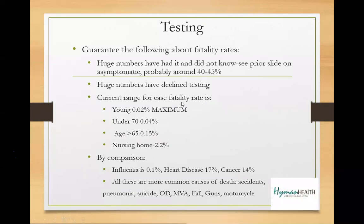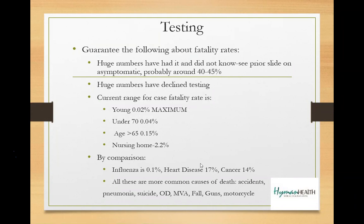The current fatality data: if you are under 70 years old, influenza is more likely to kill you than COVID. You have to be over 65 to approach the mortality level seen with influenza. In nursing home populations it's much worse — 40% to 50% of all deaths in the United States have been in nursing homes. That's the vulnerable group. You are more likely to die from heart disease or cancer than from coronavirus. That's the facts and the science.